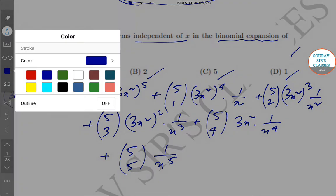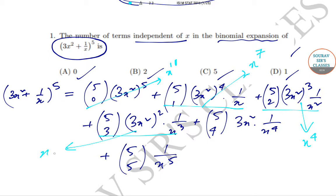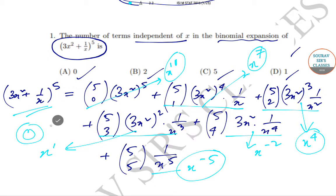In the first term the power of x is x^10, in the second term it is x^7, in the third term it is x^4, in the fourth term it is x^1, in the fifth term it is x^(−2), and in the last term it is x^(−5). So we can see that there is no term which is independent of x. Therefore, the number of terms independent of x is 0, and that is option A.